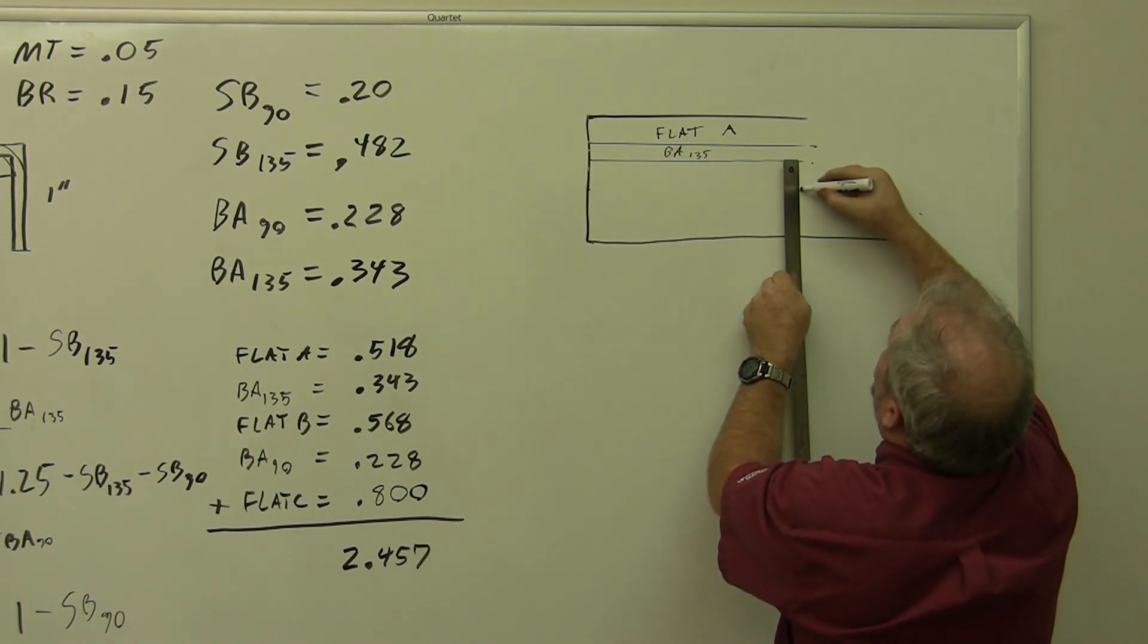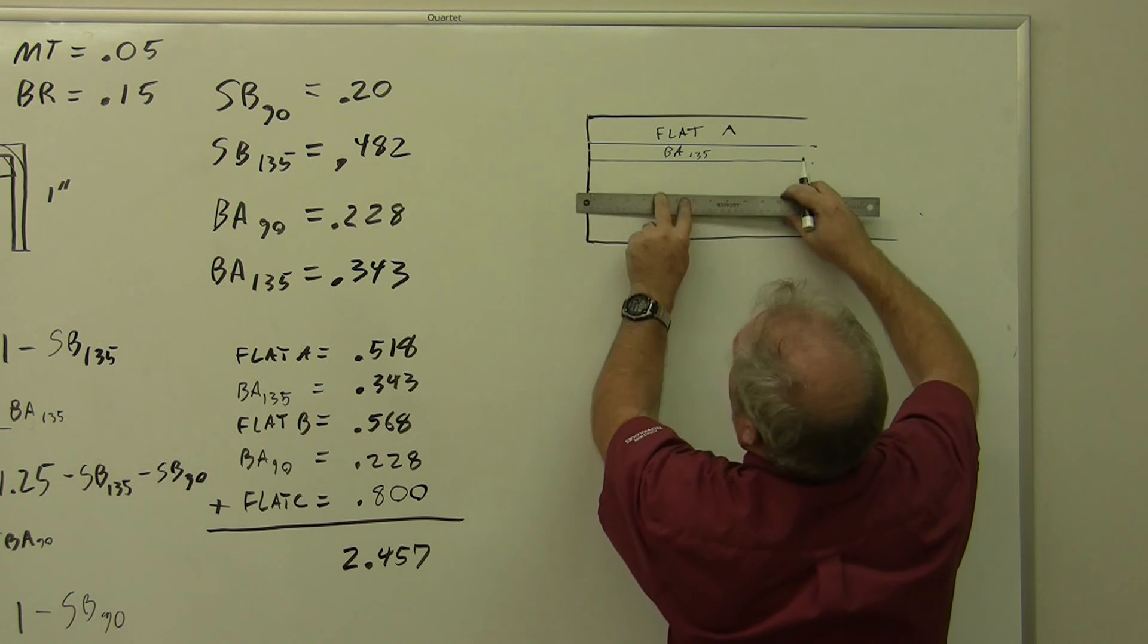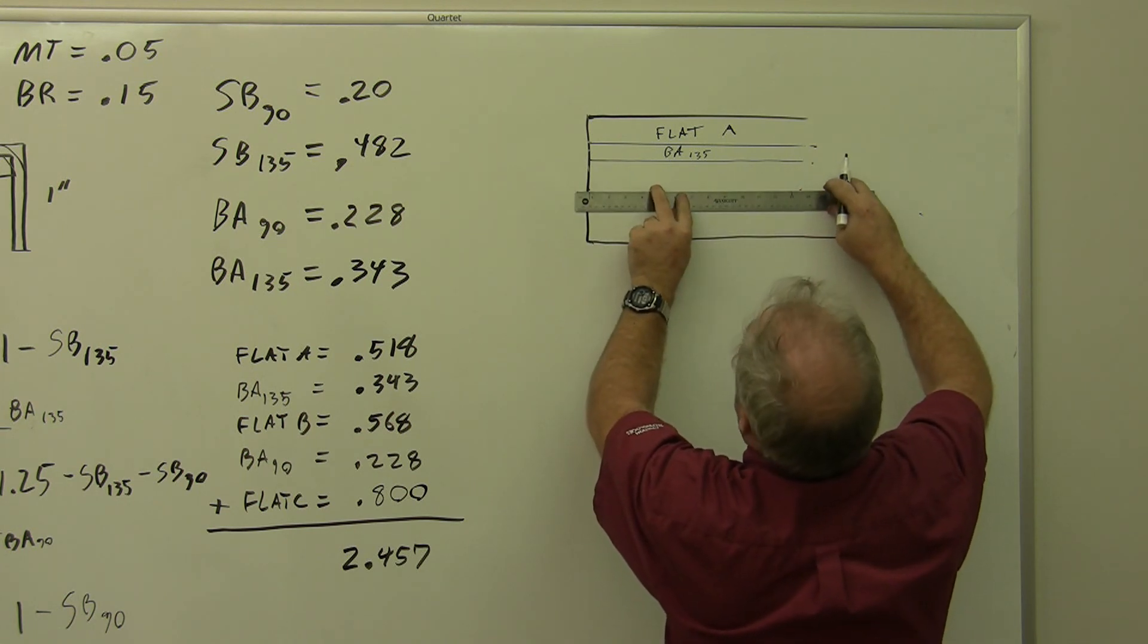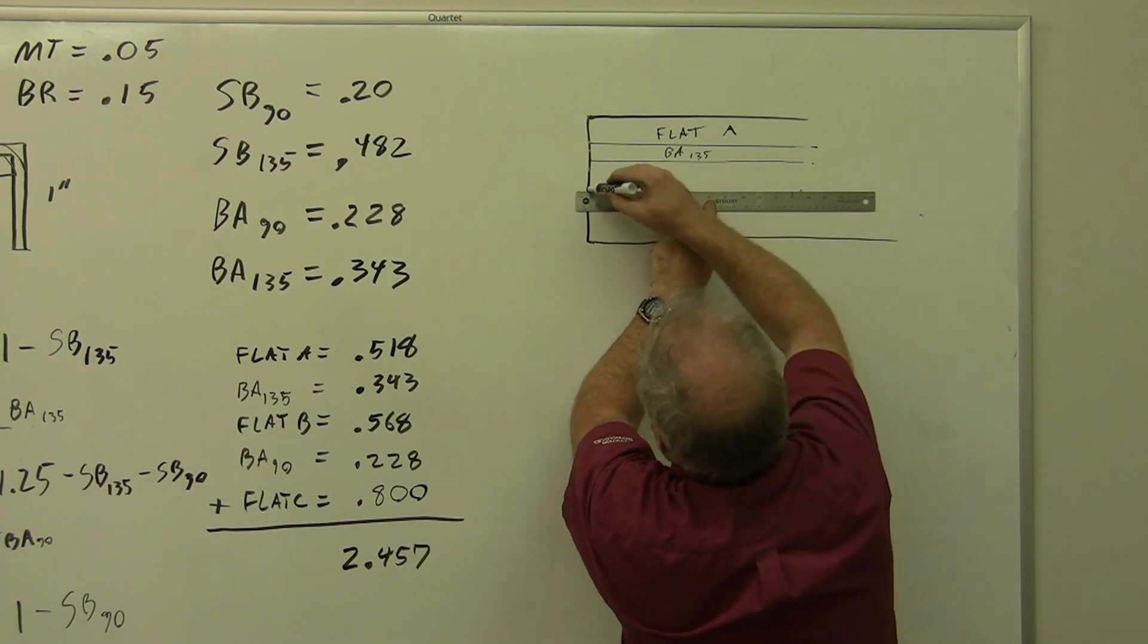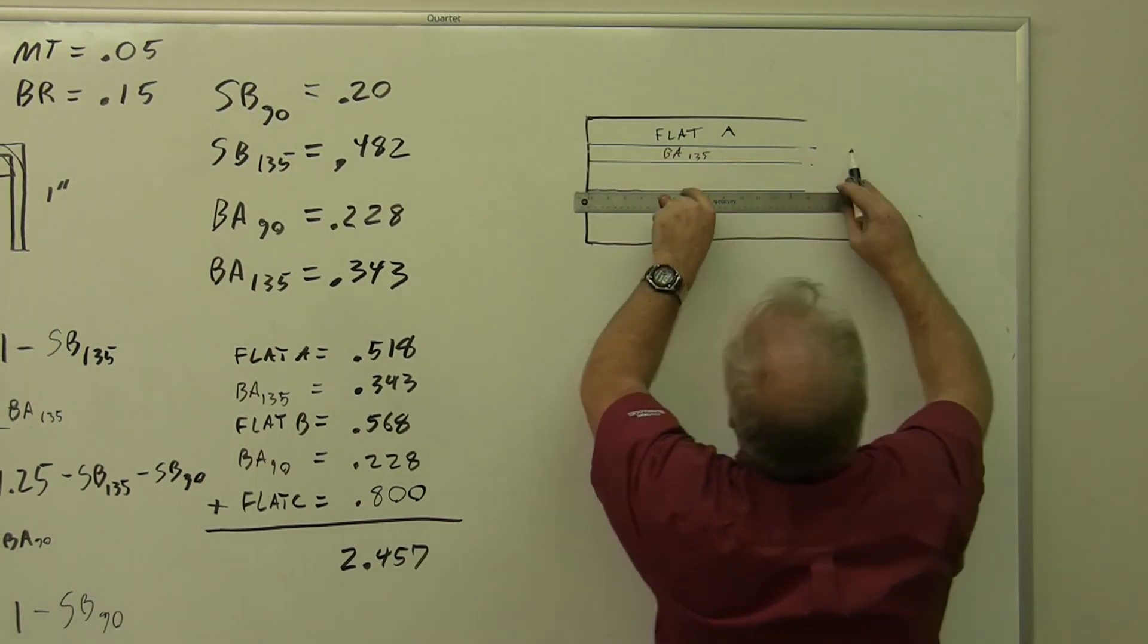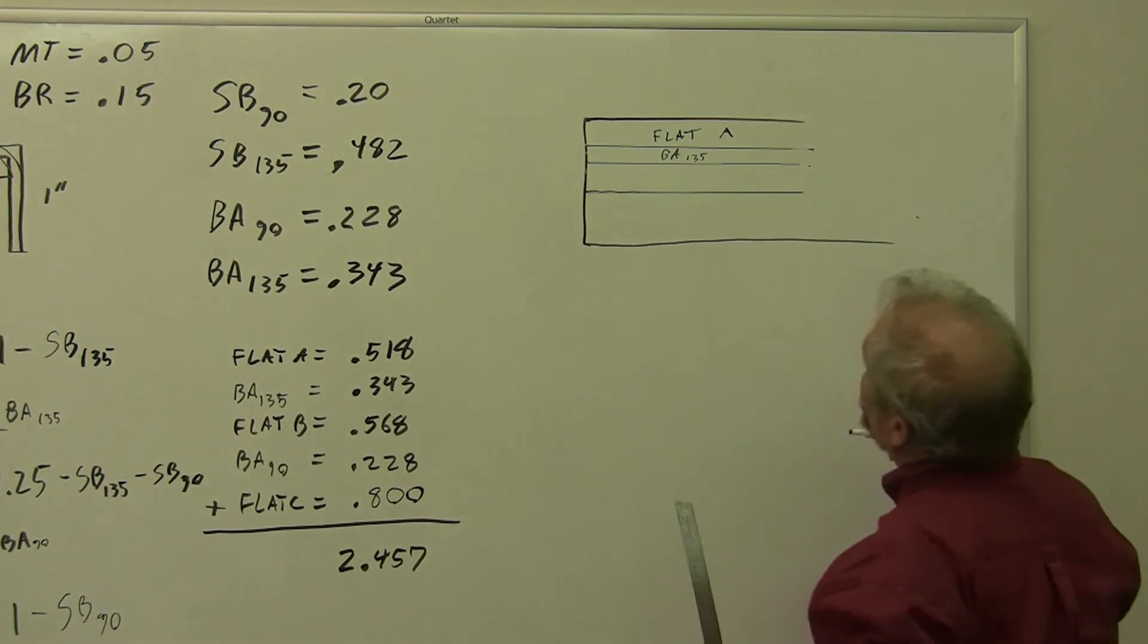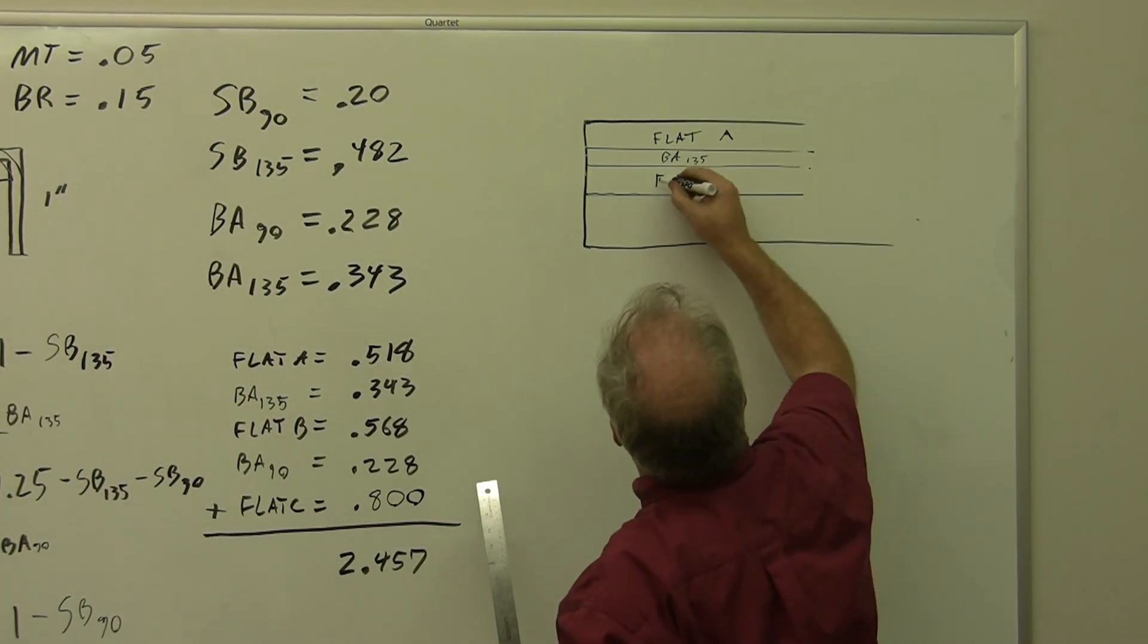For our flat C, one and a half and three sixteenths comes out to our next bend tangent line. And our next bend tangent line, again you would measure on both sides, not just one, because you've got to actually make it come out. Flat B.